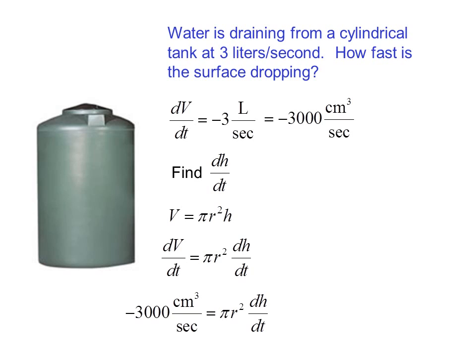Now, plugging in negative 3,000 cubic centimeters per second for the rate of change of the volume, we solve for dh/dt and get dh/dt equals negative 3,000 cubic centimeters per second divided by pi r squared. And since we don't know what r is, this is as far as we can go on this problem.